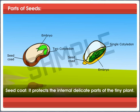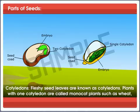Parts of Seeds. A. Seed Coat: It protects the internal delicate parts of the tiny plant. B. Cotyledons: Fleshy seed leaves are known as cotyledons.